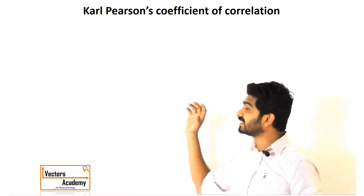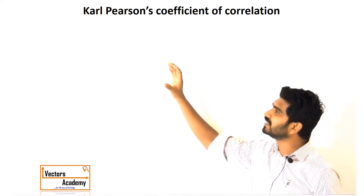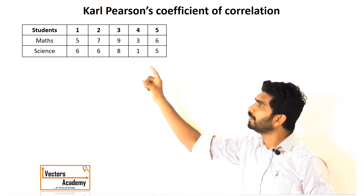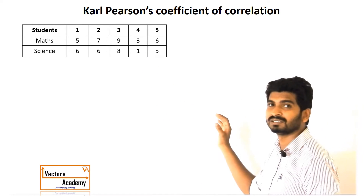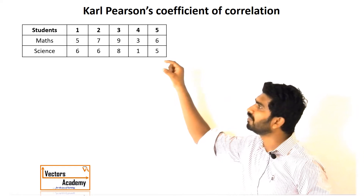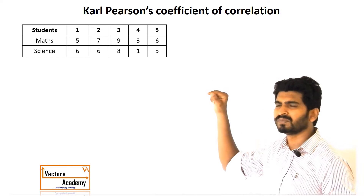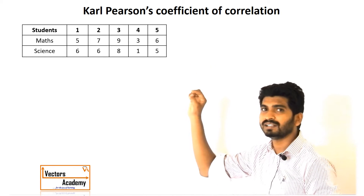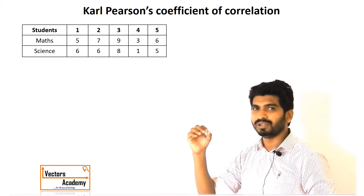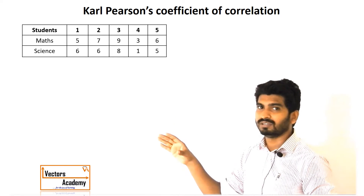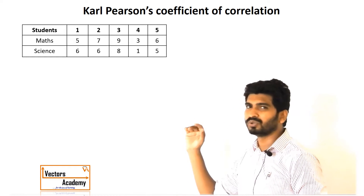Today let us understand how we calculate the coefficient of correlation. We'll consider a simple table representing the marks of maths and science of 5 students in a class. We want to find whether the marks of maths and science are correlated — meaning if a student is good in maths, he is also good in science. If there is no correlation, being good in maths doesn't imply being good or bad in science.